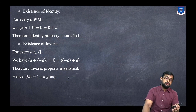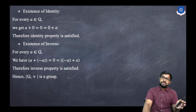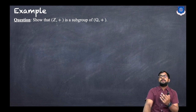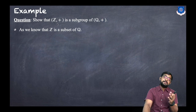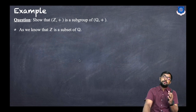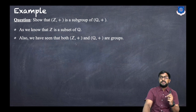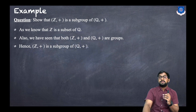Now we jump to our subgroup question, which is why we discussed those two examples. Show that Z+ is a subgroup of Q+. First, we know that Z is a subset of Q — that is obvious by definition. Also, we have seen in the previous examples that both Z+ and Q+ are groups. Therefore, Z+ is a subgroup of Q+. In exams you have to check all those conditions formally.